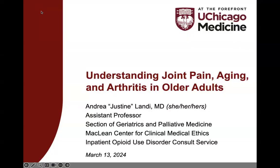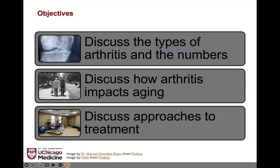Thank you so much. I'm excited to present on this topic. Let's go ahead and get started and leave plenty of time for discussion. We're going to talk about different types of arthritis and the numbers — the scope of the problem. We'll discuss how arthritis impacts aging and how aging impacts arthritis, and then we'll discuss some approaches to treatment.